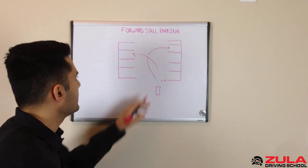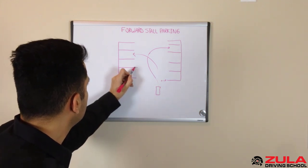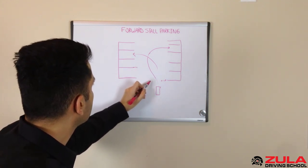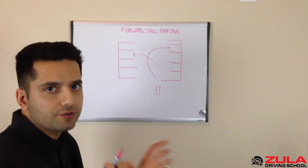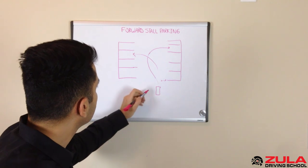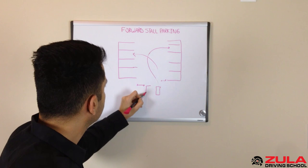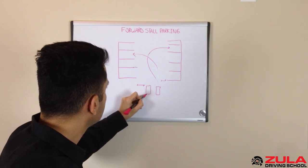But I want to show you essentially what you would do or how you would make that judgment call as to when to start turning that steering wheel to get into this parking stall. Like I said, you want to be about a car's width away and the first thing you would do is signal to the left as you're approaching.